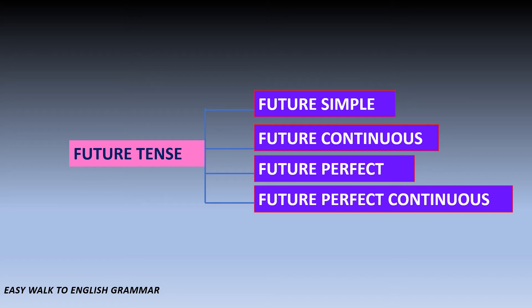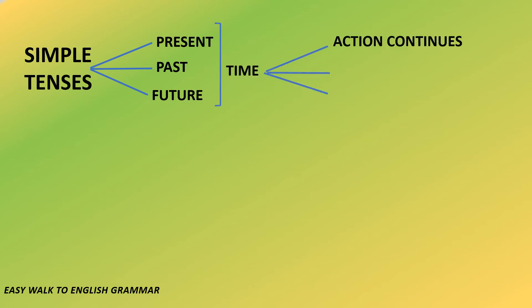Now we can move on to something new in learning tenses. As we all know, simple tenses are divided into three: the present, the past, and the future. These three simple tense forms refer to time. The time can refer to action that continues, action that is completed, and action that is going to happen in the future.